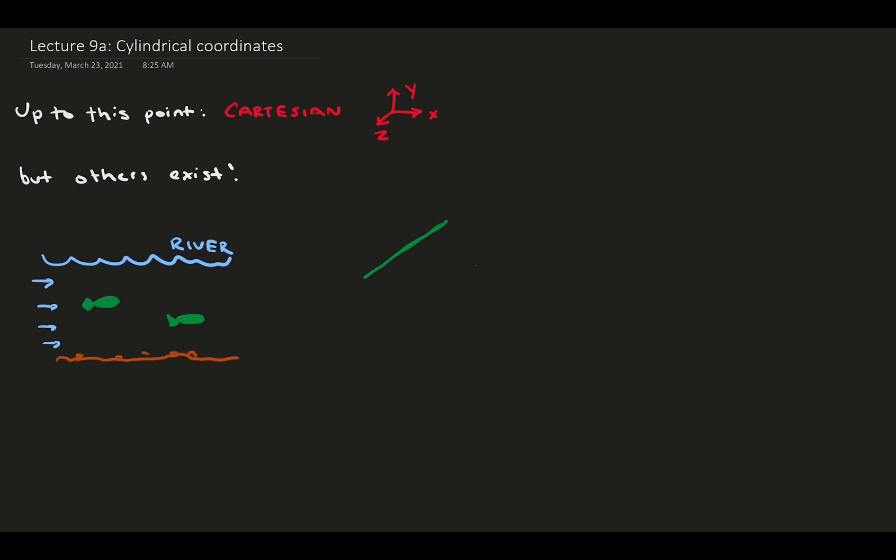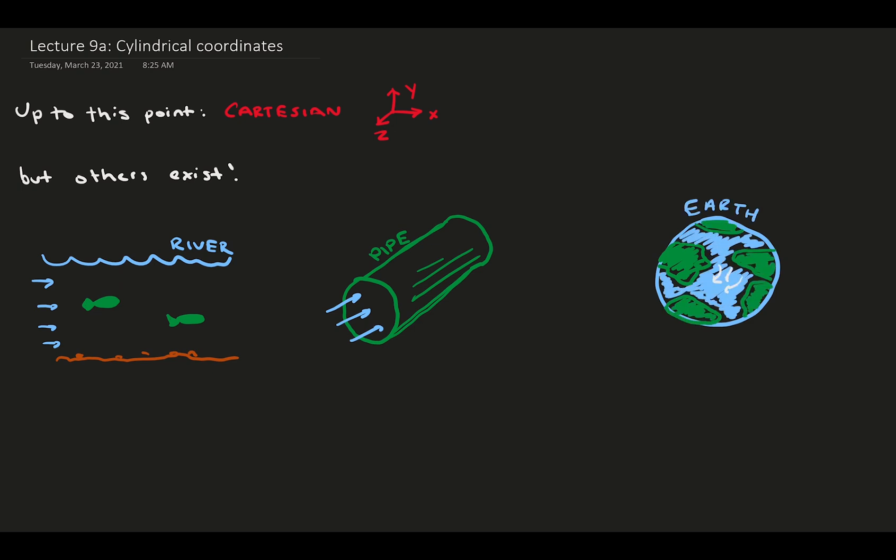Take three examples: river flow, pipe flow, and a planetary flow like planet Earth. Each situation has different needs, and the axis of symmetry can be taken advantage of with other coordinate systems. Although at first it may feel like it's over-complicating things, there are times when other coordinate systems help in analysis.